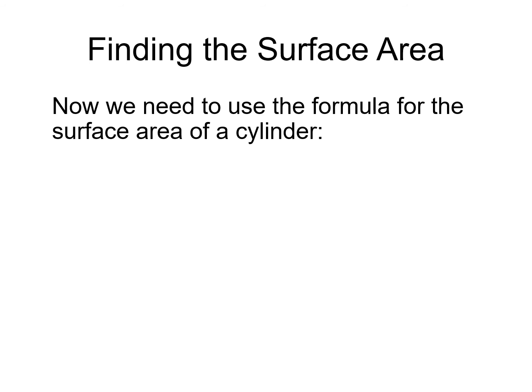Now, we need to use the formula for the surface area of a cylinder. The surface area of a cylinder is SA = πr² + 2πrh.